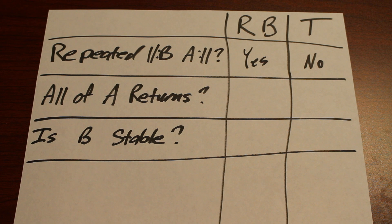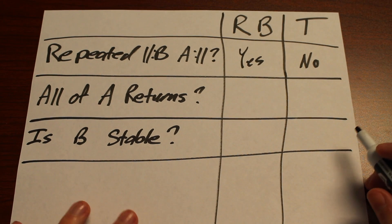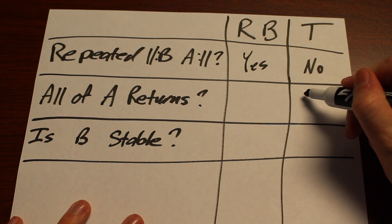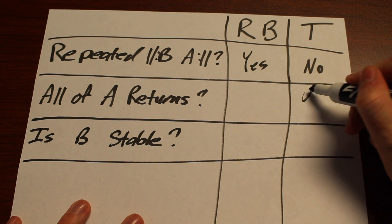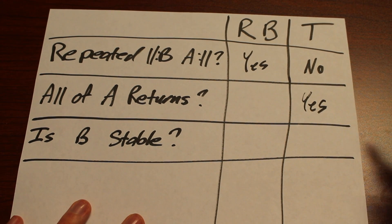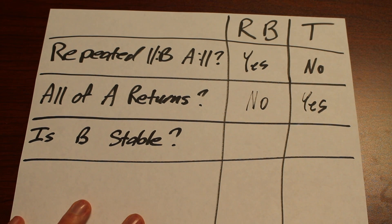Question two: does all of A return? If all of A does return, that's going to be a trait of ternary. If only half or part of A comes back, that's going to be a trait of rounded binary.